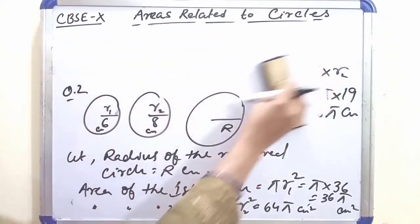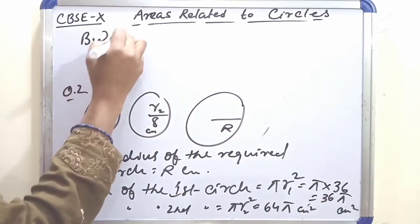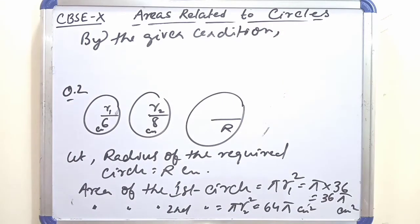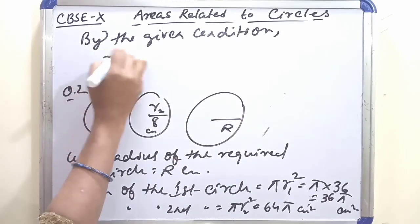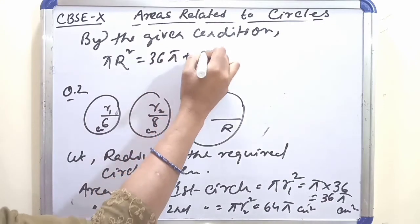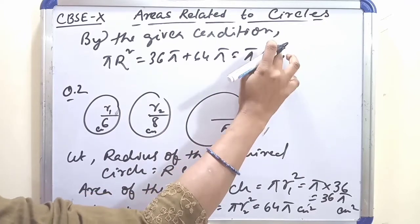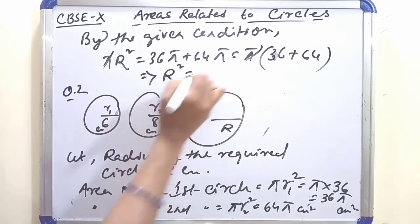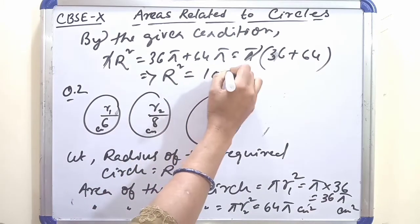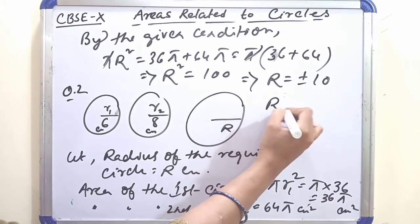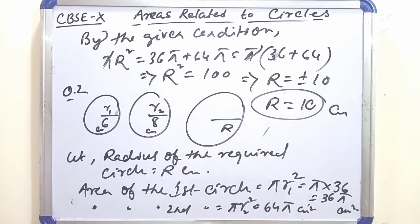By the given condition, the area of the required circle: πR² = 36π + 64π. Taking π common: R² = 36 + 64 = 100. So R = ±10. Since radius cannot be negative, R = 10 centimeters. So the radius of the required circle is 10 centimeters.